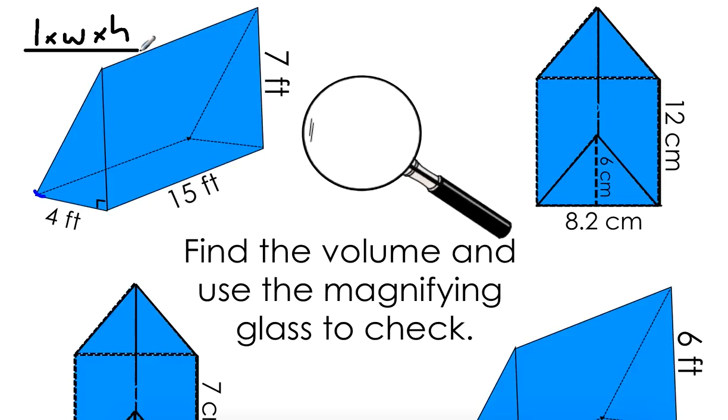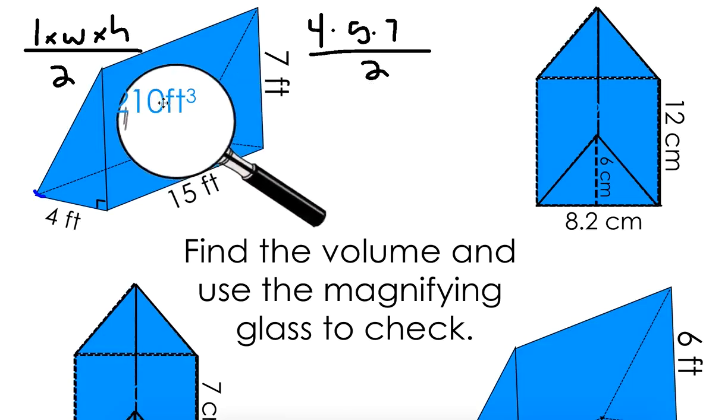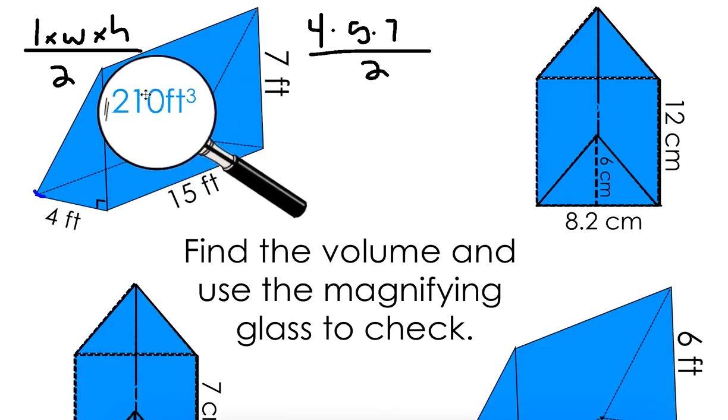And remember, a triangular prism is half of a rectangle, so it's divided by 2. So I could take 4 times 5 times 7 and divide that all by 2. And you would get 210 feet cubed.